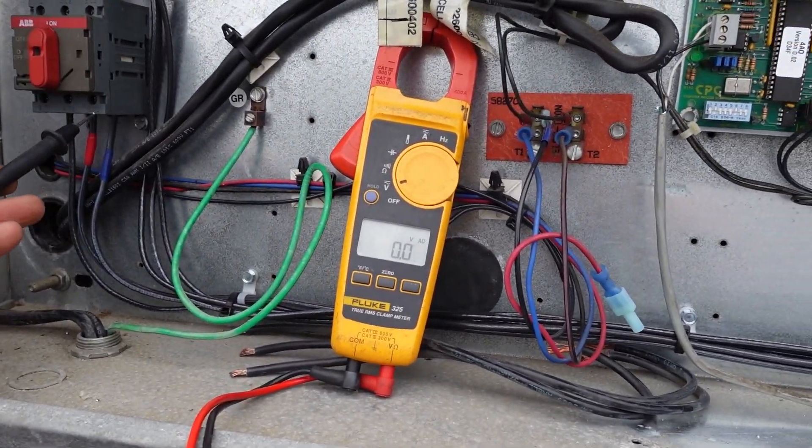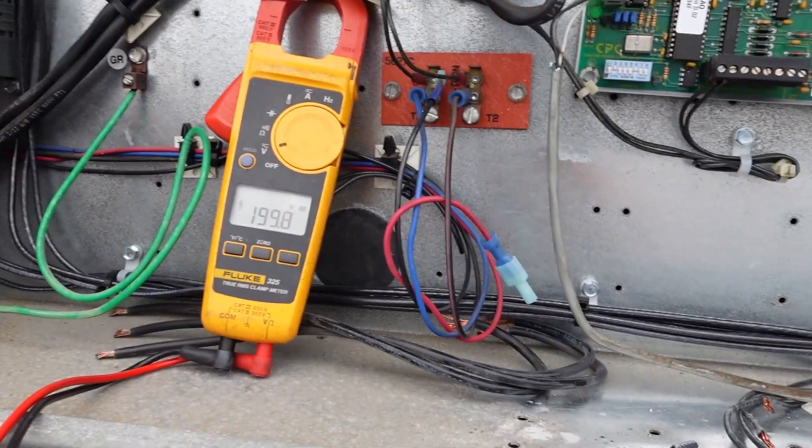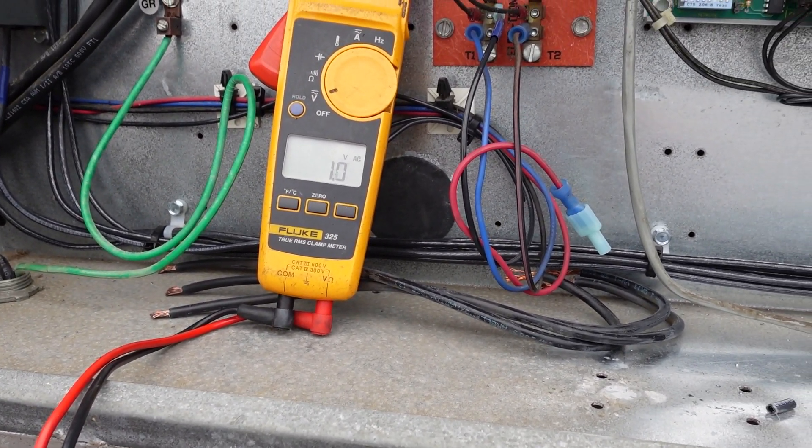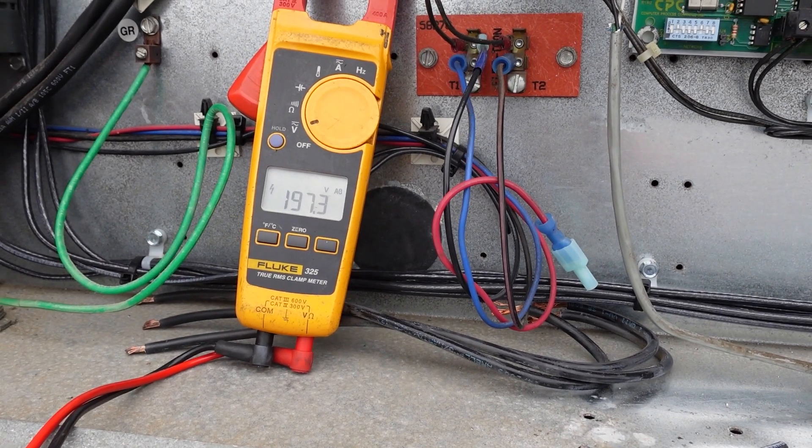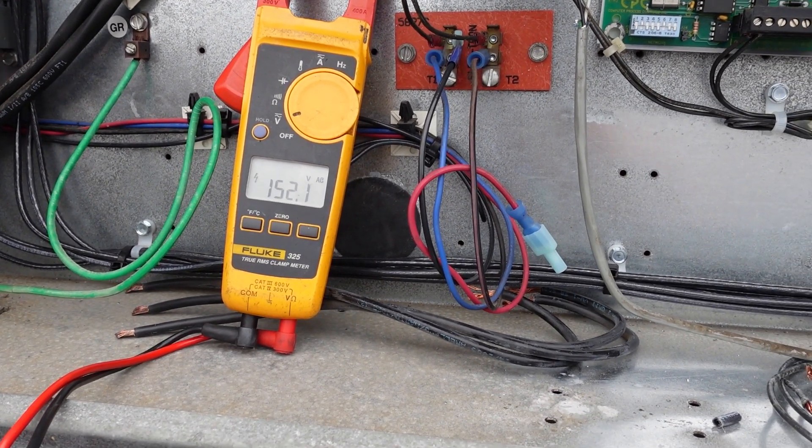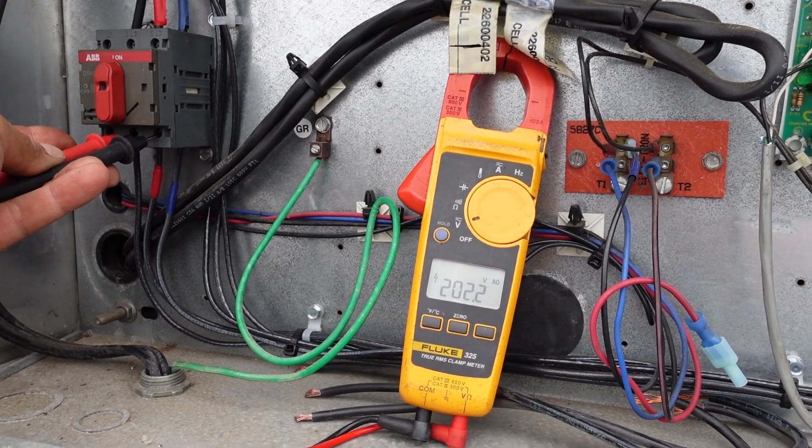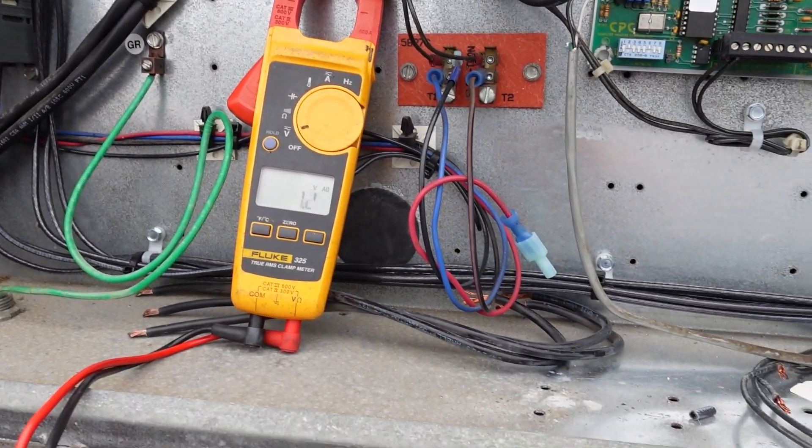Let me show you what I mean by that. So here's our meter, here's our incoming power, line one to line three, 201. Line one to line two, 197. Two to three, 202. That's on our disconnect coming in.